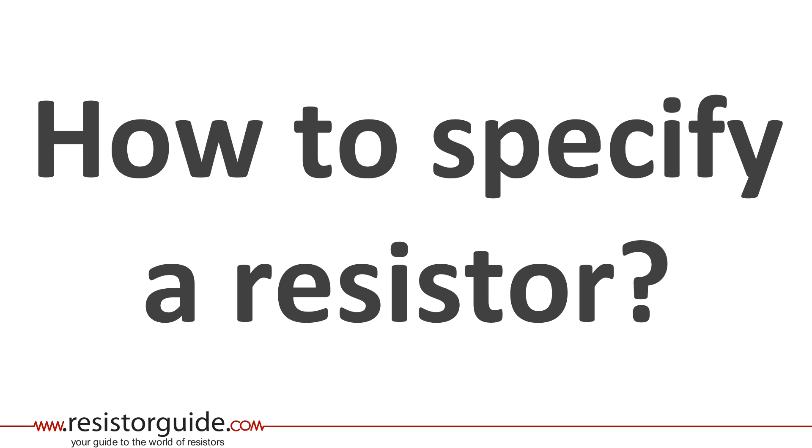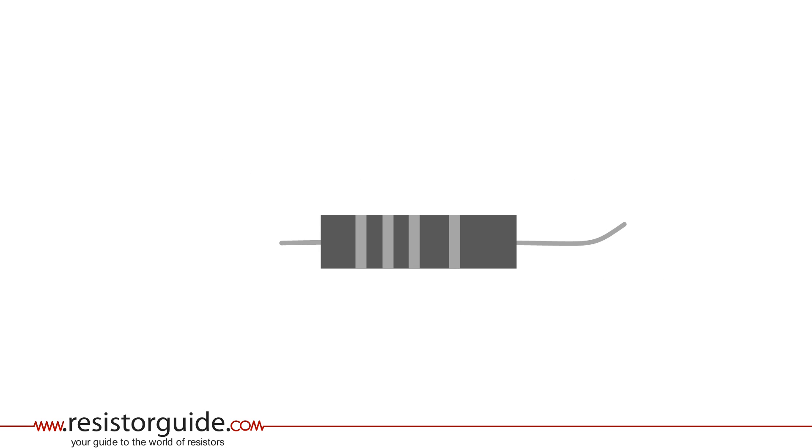In this short video we'll explain how to specify a resistor. Resistors are passive components that are connected into an electrical circuit to introduce a certain resistance. The resistance is measured in ohms.